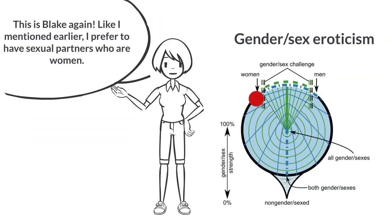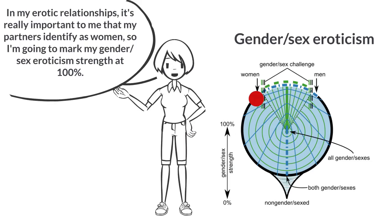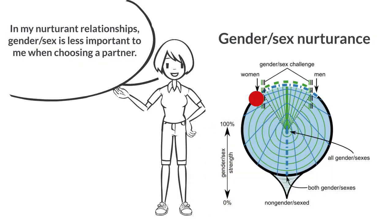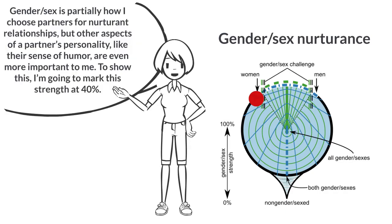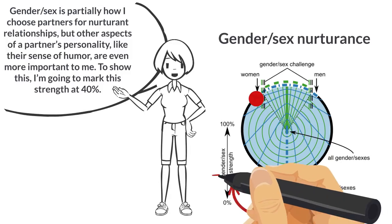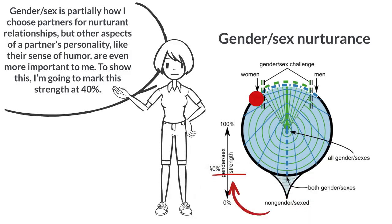This is Blake again. Like I mentioned earlier, I prefer to have sexual partners who are women. In my erotic relationships, it's really important to me that my partners identify as women, so I'm going to mark my gender sex eroticism strength at 100%. In my nurturant relationships, gender sex is less important to me when choosing a partner — other aspects of a partner's personality, like their sense of humor, are even more important. To show this, I'm going to mark this strength at 40%.